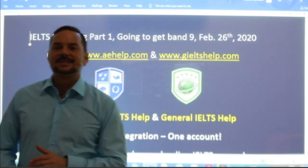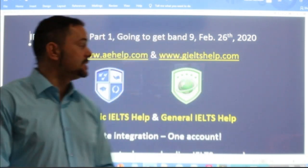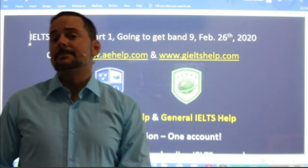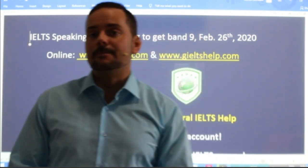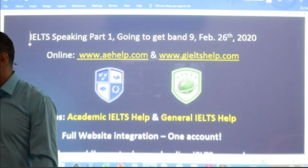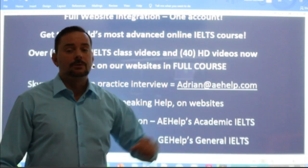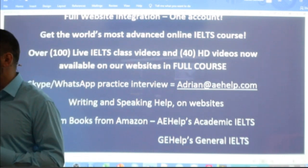Hello to all of our members. Michael Phan, I see that you said you just paid for membership — that's on our website. You probably paid for a premium course at aehelp.com or giltshelp.com. To be a member of the YouTube channel, that membership is controlled by Google and YouTube. You have to click the join button beside the subscribe button where it's available. If you don't see that button, you can send me an email at adrian@aehelp.com and I can send you more information on how you might be able to become a member of this YouTube channel.